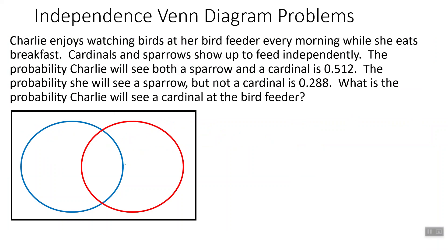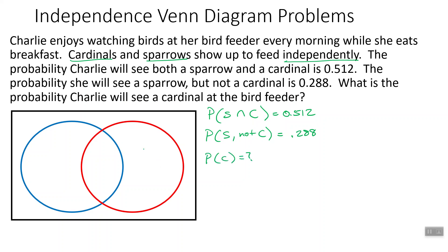Let's look at an example with independent events — this one is tricky. Charlie enjoys watching birds at her bird feeder every morning while she eats breakfast. Cardinals and sparrows show up to feed independently. The probability Charlie will see both a sparrow and a cardinal is 0.512, and the probability that she sees a sparrow but not a cardinal is 0.288. We want to find the probability that Charlie will see a cardinal at the bird feeder. Organizing this in a Venn diagram: the intersection is 0.512, and sparrow-but-not-cardinal is 0.288.